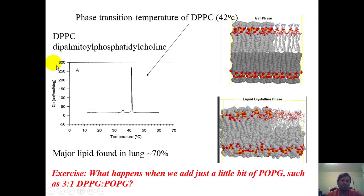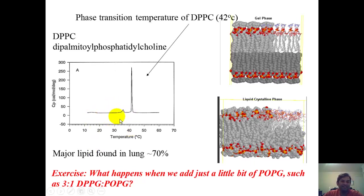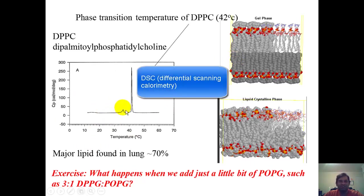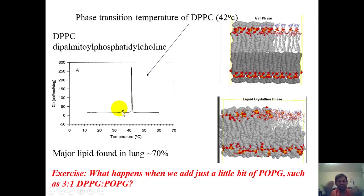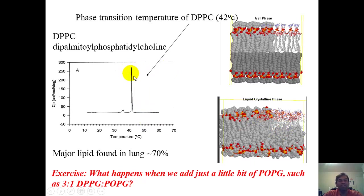This technique is called differential scanning calorimetry, also known as DSC — a way to measure phase transitions in lipids. If you take pure DPPC bilayers, you see a sharp transition at the phase transition temperature of 42 degrees. A little bit of this transition from gel to liquid crystalline actually begins happening earlier, where some rotation and motion start to occur. But the main phase transition from gel to solution — also known as liquid crystalline — happens right at 42 degrees.